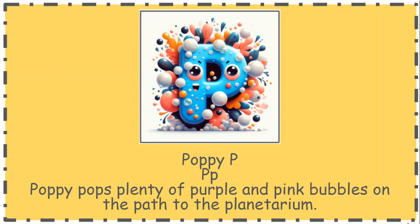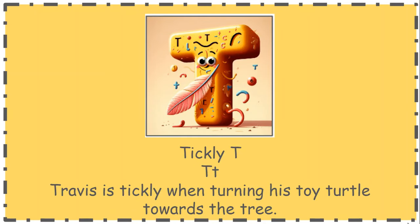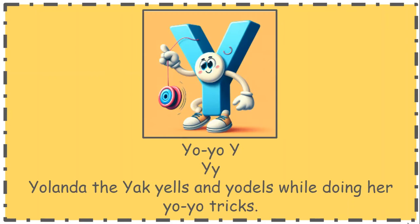Poppy, poppy P. Poppy pops plenty of purple and pink bubbles on the path to the planetarium. Poor Rosie — Rosie is our rumbly R, and Rosie is feeling rumbly in her tummy today. And we have Travis. Travis is our tickly T. Travis is tickly when turning his toy turtle toward the tree. And then we're going to talk about Yo-Yo Y today. Yolanda the yak yells and yodels while doing her yo-yo tricks. Today, Yolanda, yo-yo Y, is going to be used as a vowel in the word cry, stealing that I sound.